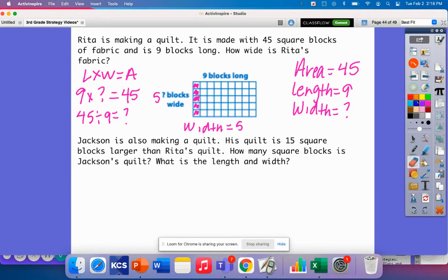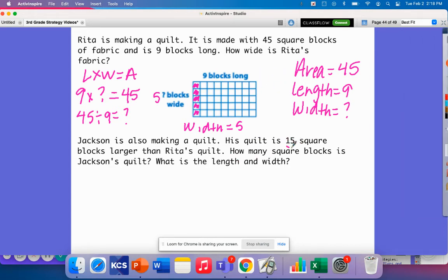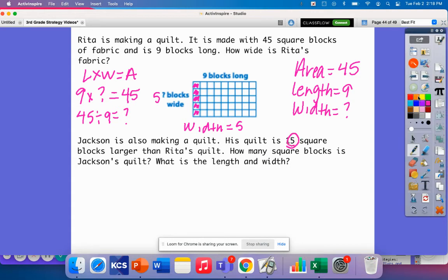I'm going to use this orange and kind of add on to this to show Jackson. It does tell me that there's 15 square blocks larger. Now, how can I add 15 square blocks here? Well, what I'm going to do is just do it row by row because I already know that there's 5 here.